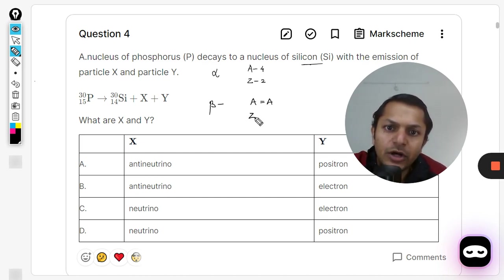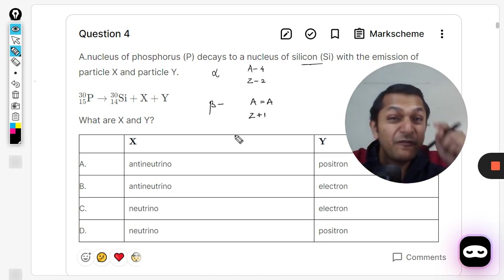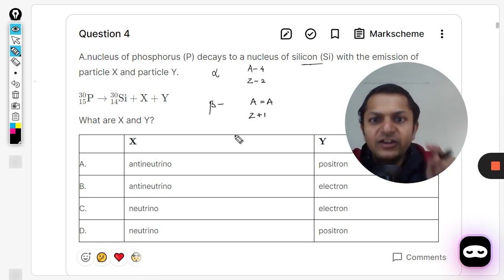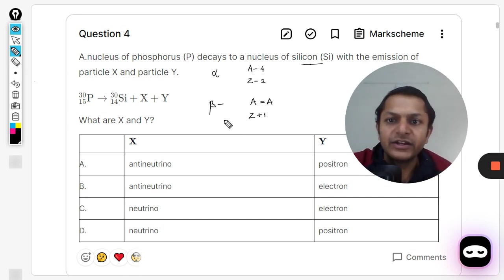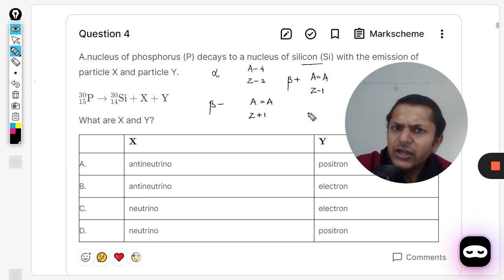Very important: if it is beta minus, atomic number will increase. Now if it is beta positive, again the mass number does not change, but the atomic number reduces by one. You have to remember this thing, it's not given in the data booklet.